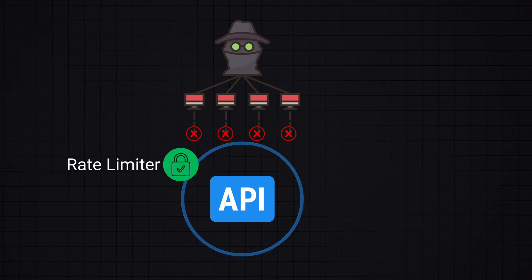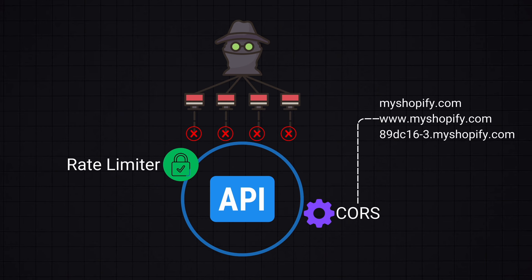A common practice is also to configure CORS settings, which stands for Cross-Origin Resource Sharing. With CORS settings you can control which domains can access your API, preventing unwanted cross-site interactions.